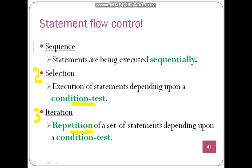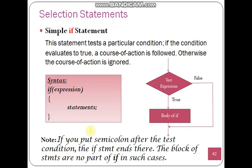We have already seen the sequential way of execution in the previous programs. Now we are starting the selection statements. The simple if first evaluates the expression, and if the expression is true, the course of action is followed - the statements will be executed. It first checks the expression, and if the expression is true then it evaluates the body of if. Otherwise, if the expression is false, it skips those statements and moves to the next statement after the if.